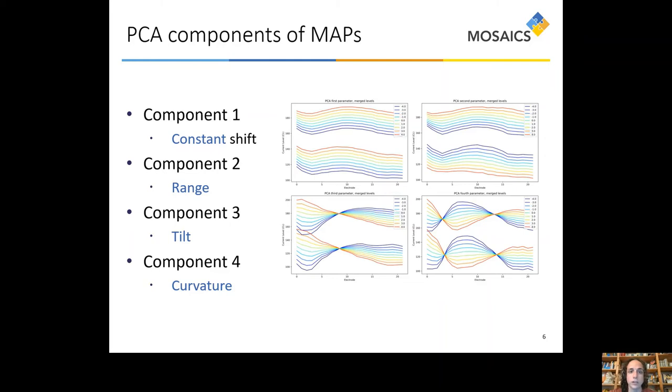Now, the approach that I took was quite different because instead of calculating average levels and average dynamic range, I used principal component analysis. This is a dimensionality reduction technique that allowed me to condensate the 44 values that make up T and C levels for a Cochlear brand cochlear implant into four values that are a linear combination of this 44. So, for example, the first component here, on the right you can see maps which differ from each other only by different amounts of the first component. We can see rather easily that these maps look like they are all shifted by a constant amount. And that is why the first component has been called constant shift for us.